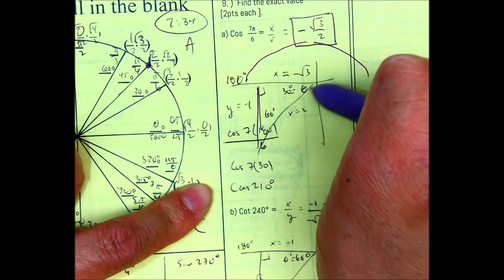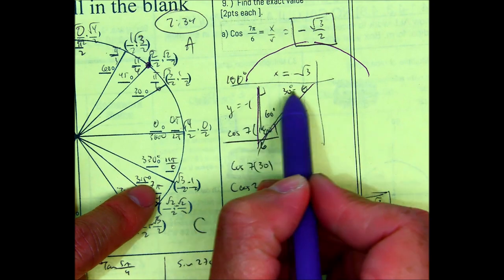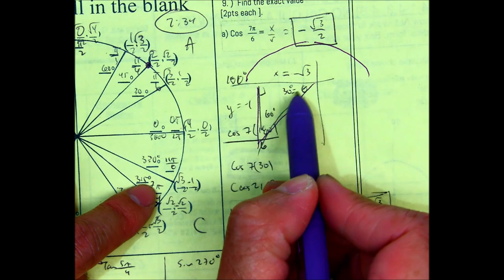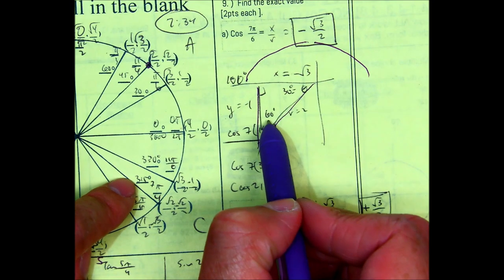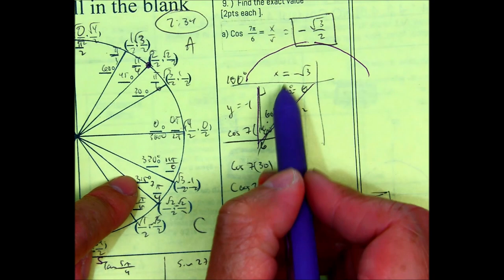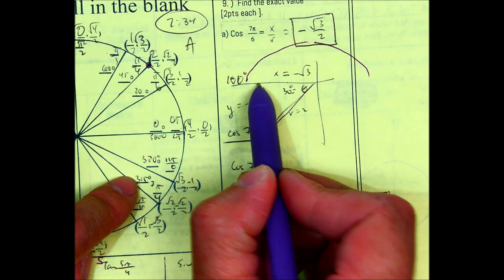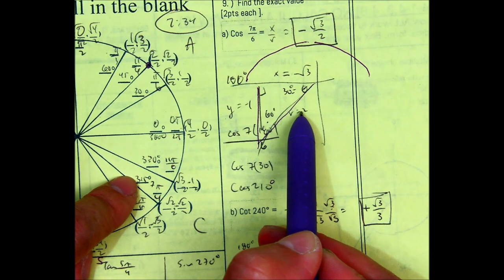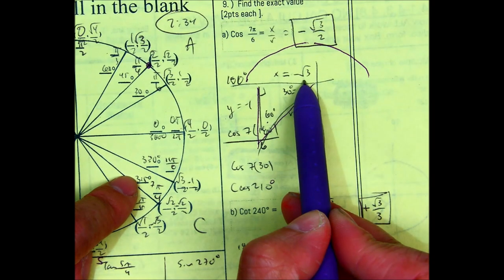Always across the 30 degree angle is a 1. In this case, it's negative because you're going down. That means this is a 60 degree angle. Always across a 60 is a radical 3. In this case, it's negative because you're going left. And then your r value, in this case, is a 2. Cosine is x over r. So negative radical 3 over 2.